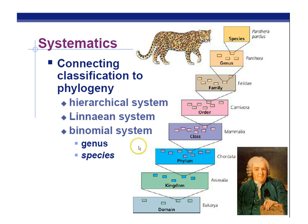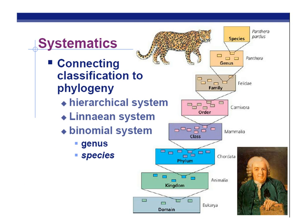The inner groups are embedded within the higher levels of classification, and we keep grouping organisms according to their characteristics, eliminating different organisms based on different characteristics until we get down to the species level.